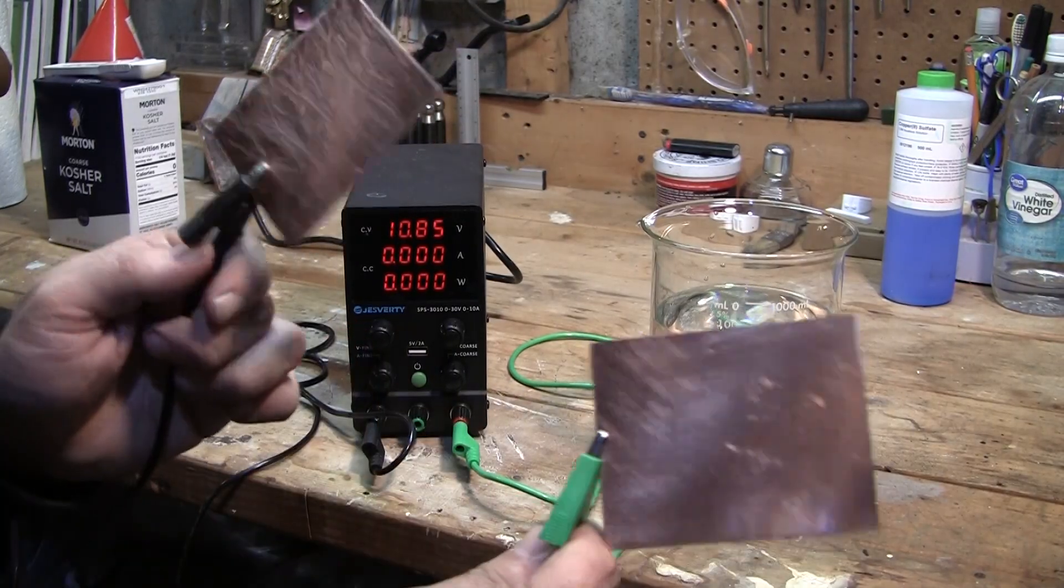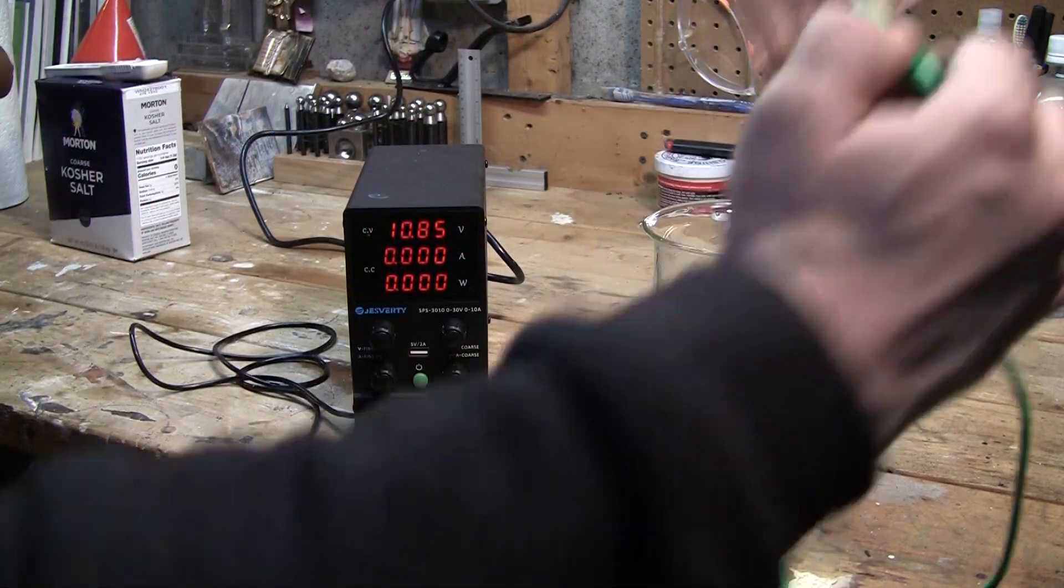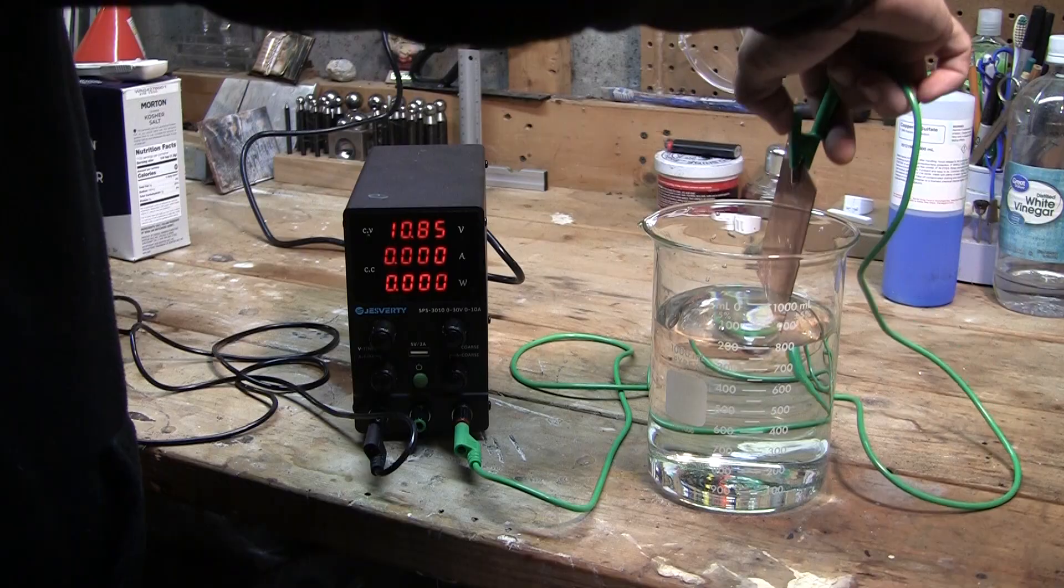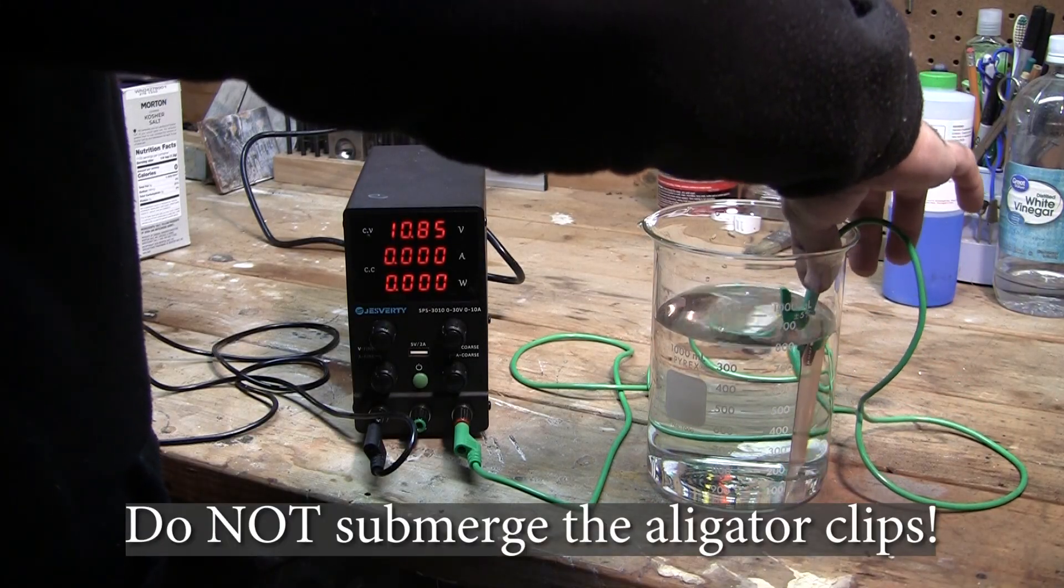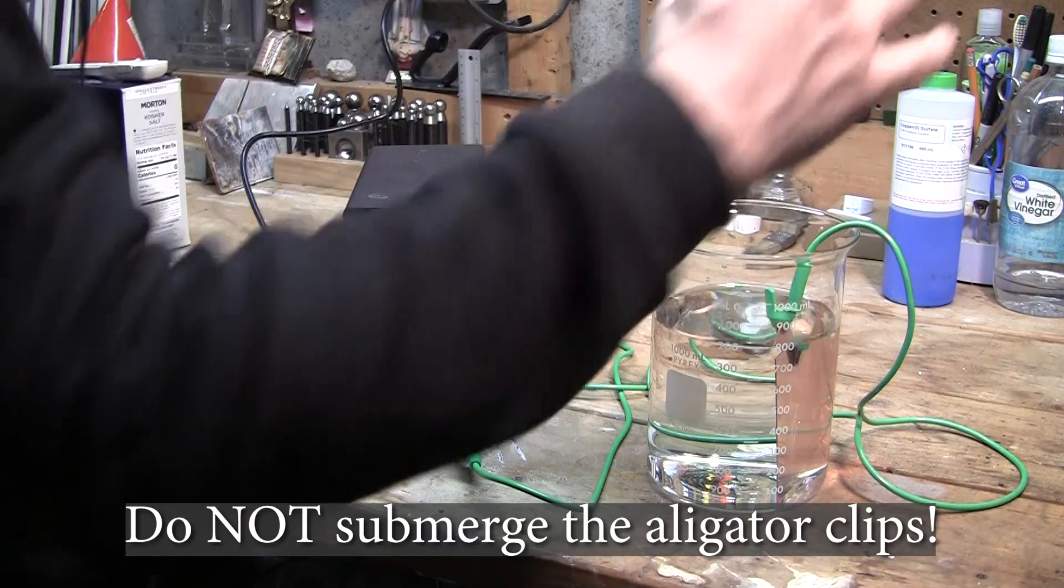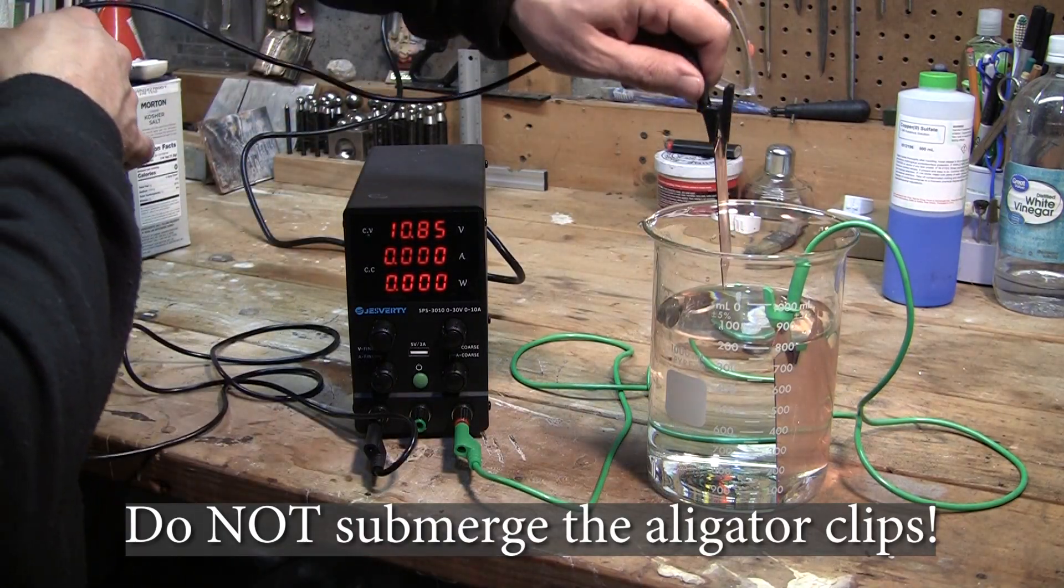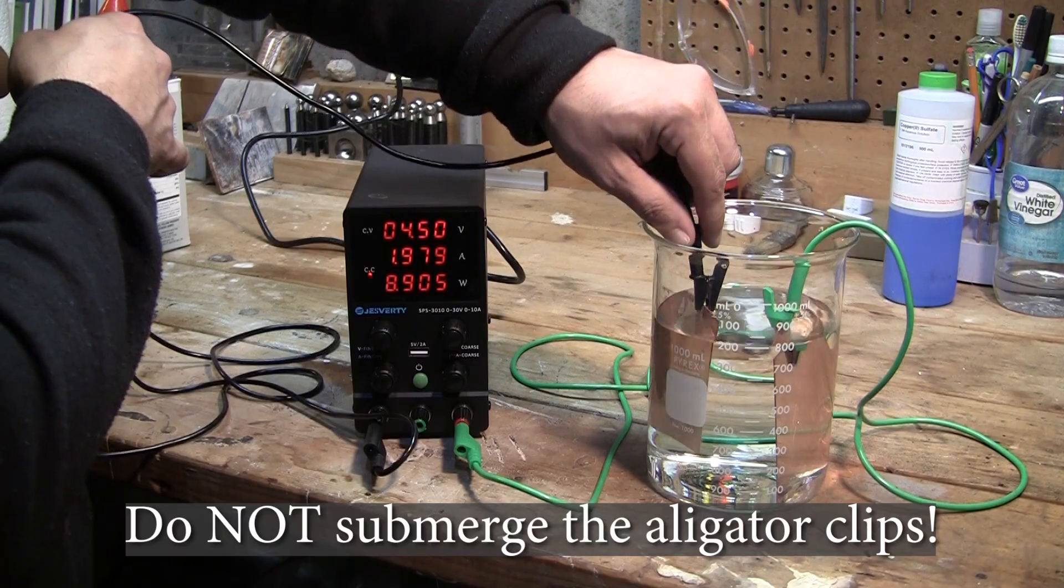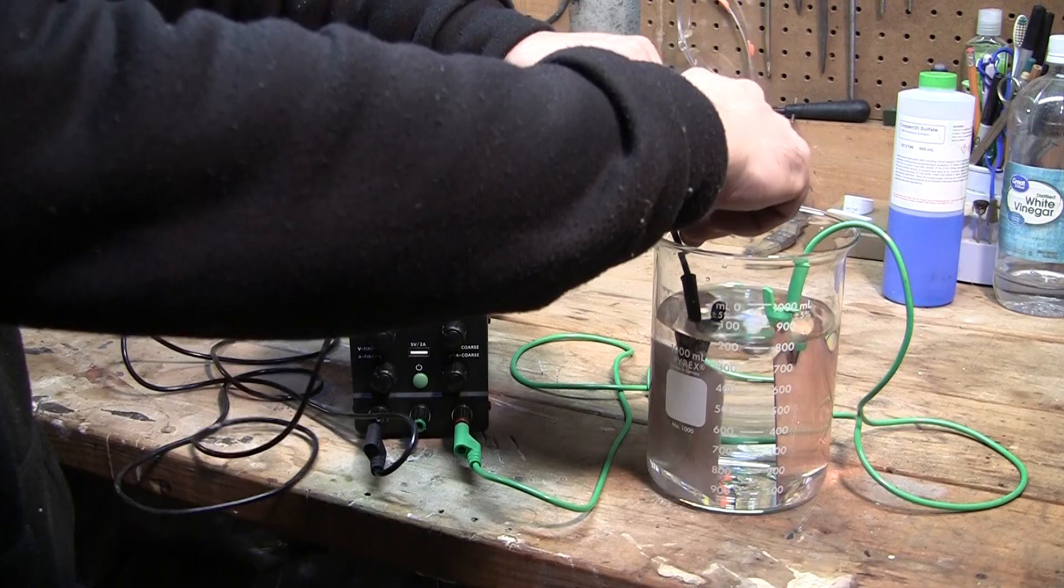Now one's going to be connected to the positive. One's going to be connected to the negative. And the one that's connected to the positive is going to get dissolved into the solution. And that's what's going to turn it blue or a bluish green, really. As you can see, I got the green is the positive. The black is the negative. And I'm just going to dip it in the solution. Make sure they don't touch. Then I got the negative going in. And you'll notice it starts bubbling almost immediately.